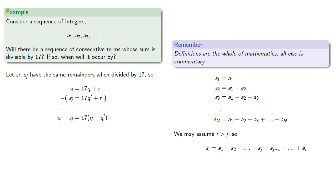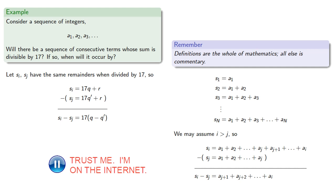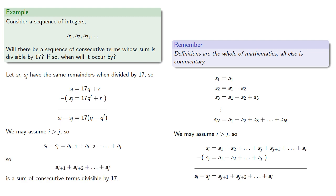And if we subtract Sj we get aj+1 + aj+2 + ... + ai. And so this gives us our sum of consecutive terms divisible by 17.